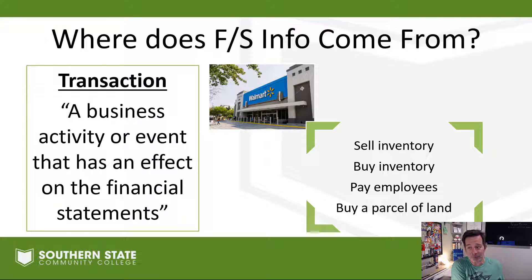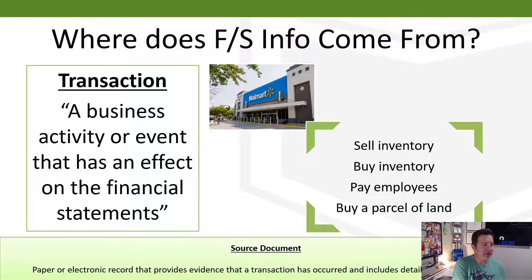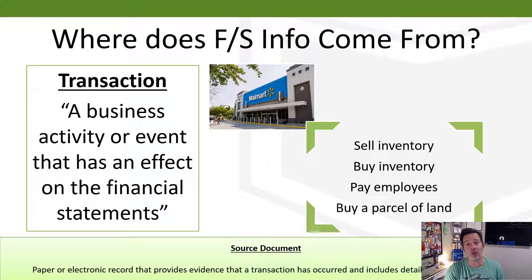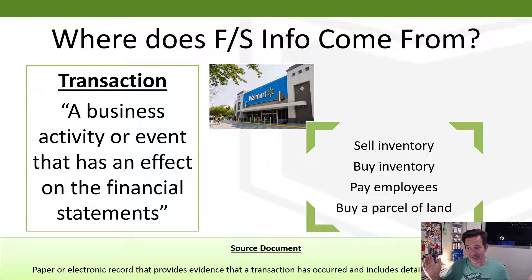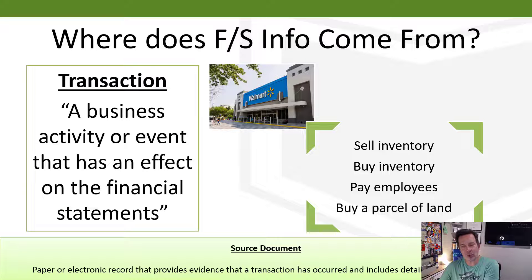In accounting, all we're doing is taking all these transactions, recording them correctly, and then compiling financial statements that tell the story of what happened during the period. This information comes from our source documents — a paper or electronic record that provides evidence of a transaction and includes details of what happened. If you've ever been given a receipt, you've got a source document. Invoices, bills, and memos can also be source documents.